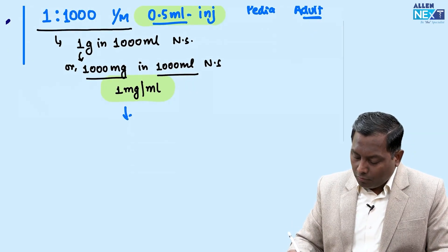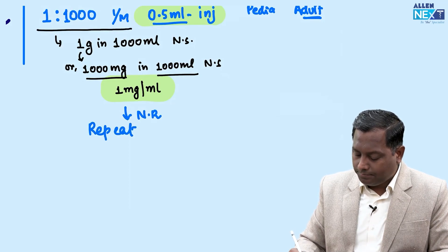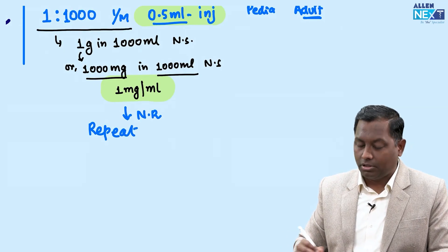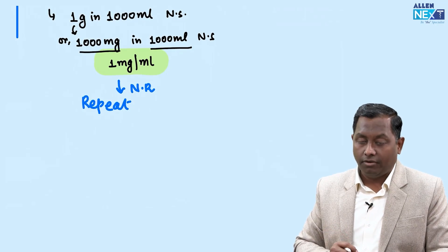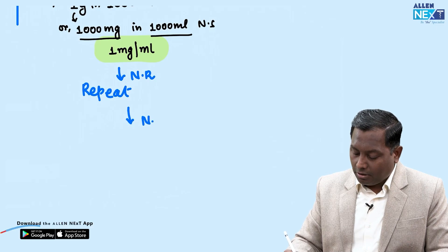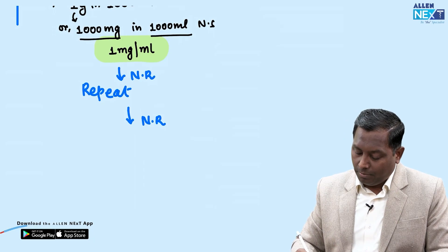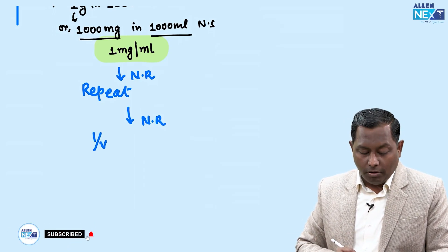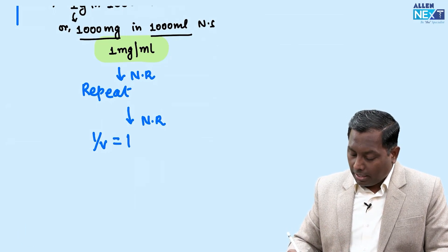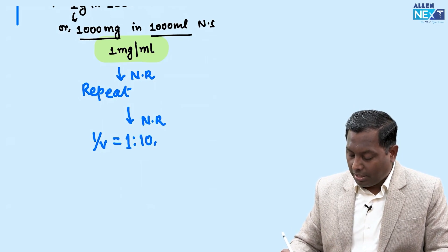If it is non-responsive, we repeat the same dose. Make sure your nursing staff is competent to find the route. If still non-responsive, we will give via IV route. Remember, it can cause arrhythmia which can be fatal, so we should further dilute it to 1:10,000.